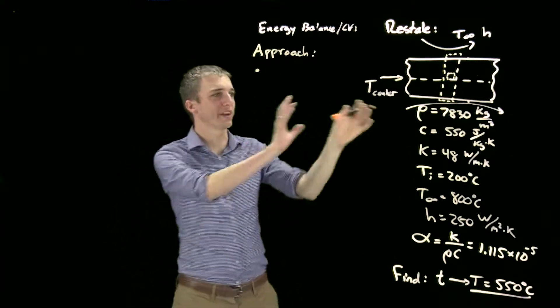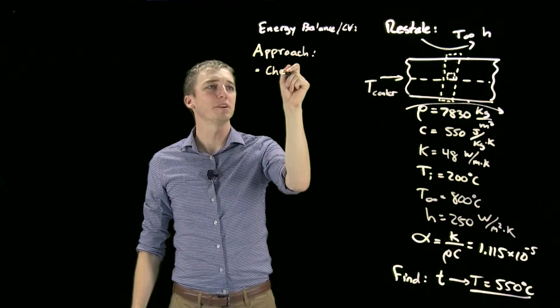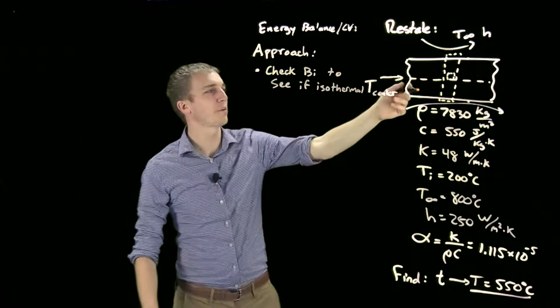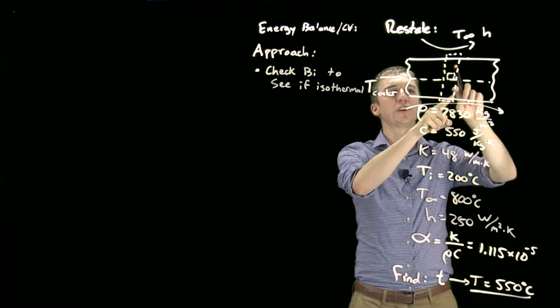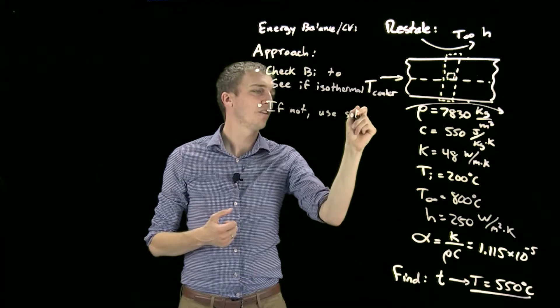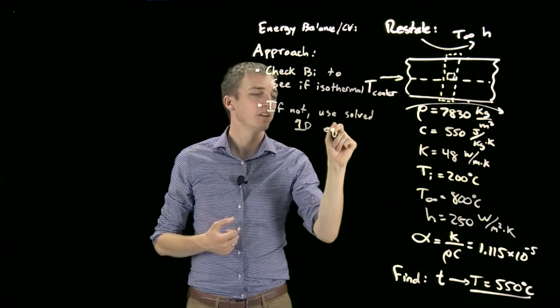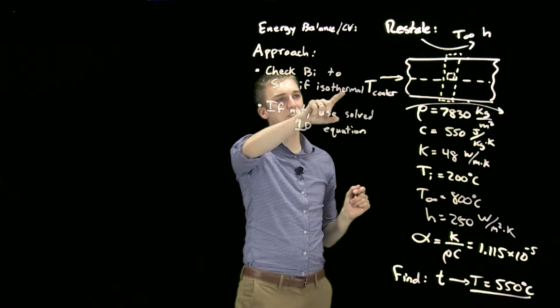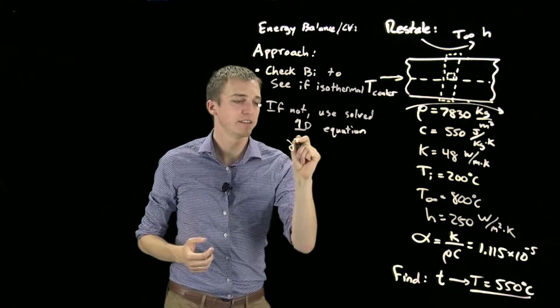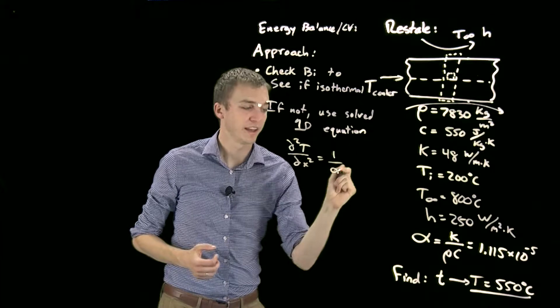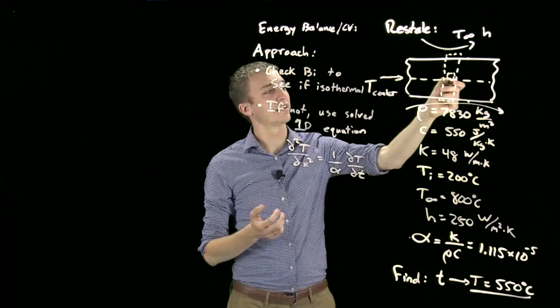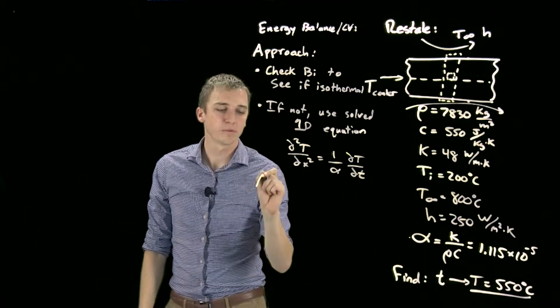Let's discuss approach. The first thing we do—this is a transient problem—we always check the Biot number to see if it's isothermal. If it's isothermal, we're going to use this top control volume and treat the entire thing as one lumped temperature. But if not, we will use the solved 1D equation. If we can't use a lumped capacitance approach, then we're going to use this small differential control volume representing the heat diffusion equation: d²T/dx² = (1/α)(dT/dt). We will use the solution to this equation to find our minimum temperature.